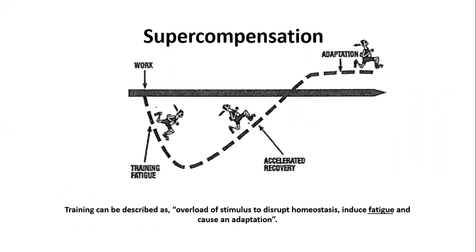Super compensation: on this figure we have a horizontal baseline. We give someone some form of stress for whatever system of the body we're targeting. We get training fatigue, a drop below baseline — some overreaching — then an element of recovery, and an adaptation that rises above the initial level. It can be described as an overload of stimulus to disrupt homeostasis, induce fatigue, and cause adaptation. The word 'fatigue' is underlined because we have to get the amount of fatigue right.